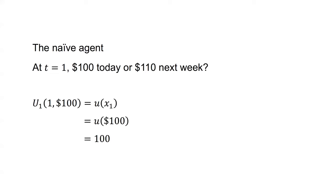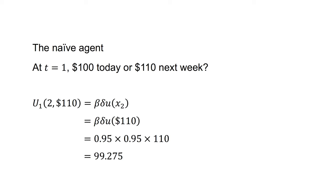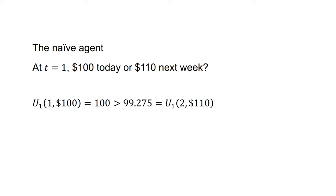But this choice does not accord with the naive agent's preferences next week. At t=1, the discounted utility of $100 is u(x1) equals u(100) equals 100. The discounted utility of $110 a week later is u1(2,110) equals beta*delta*u(x2) equals beta*delta*u(110) equals 0.95 times 0.95 times 110, which equals 99.2. As u1(1,100) is greater than u1(2,110), $100 in one week delivers greater discounted utility than $110 delivered in two weeks. From the point of view of week one, the present biased agent will prefer to receive the $100 immediately. At t=0, the naive agent's preference is inconsistent with what it will be next week at t=1.